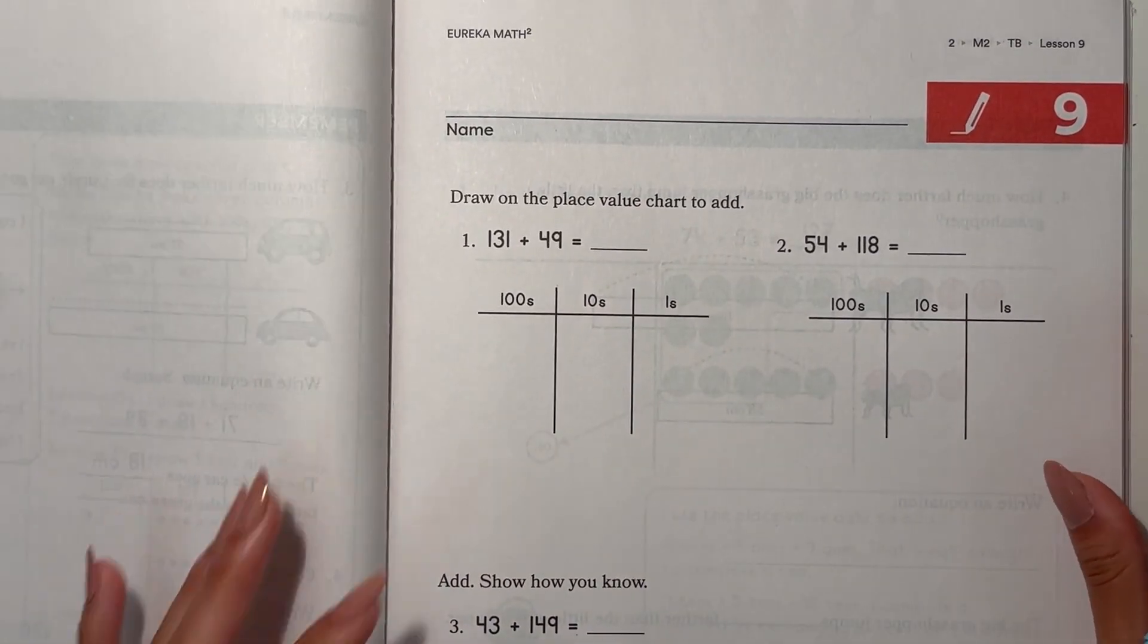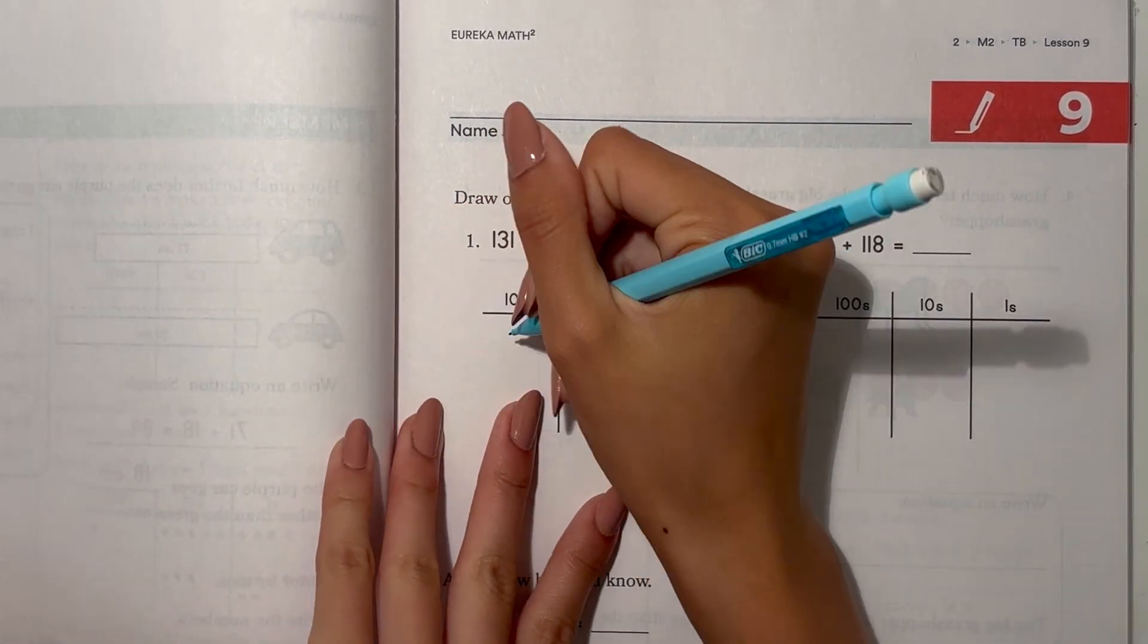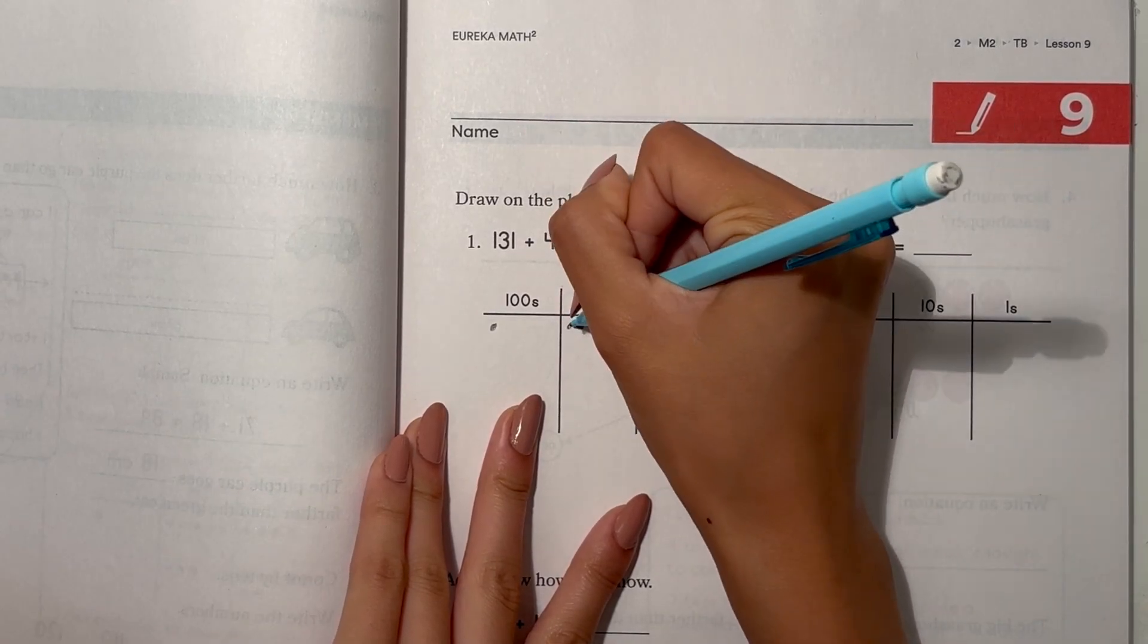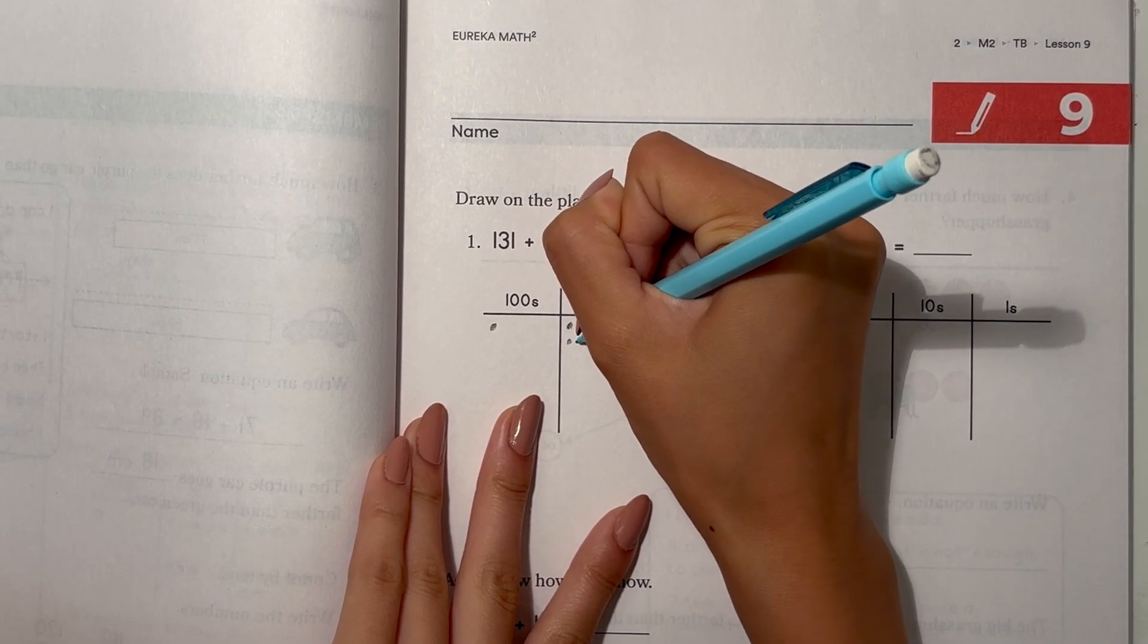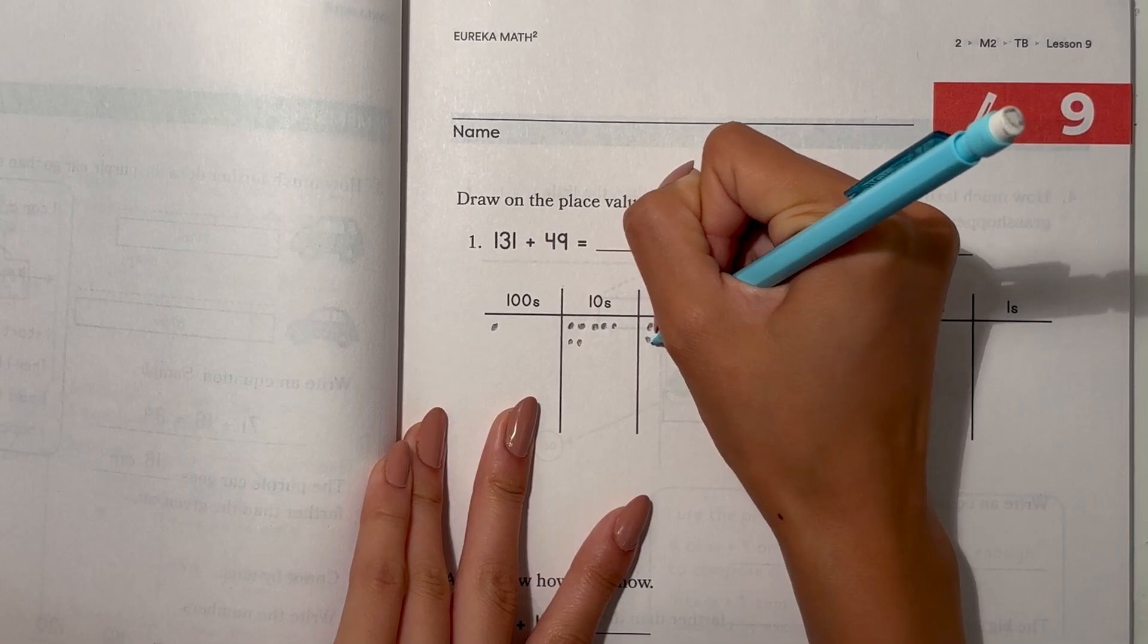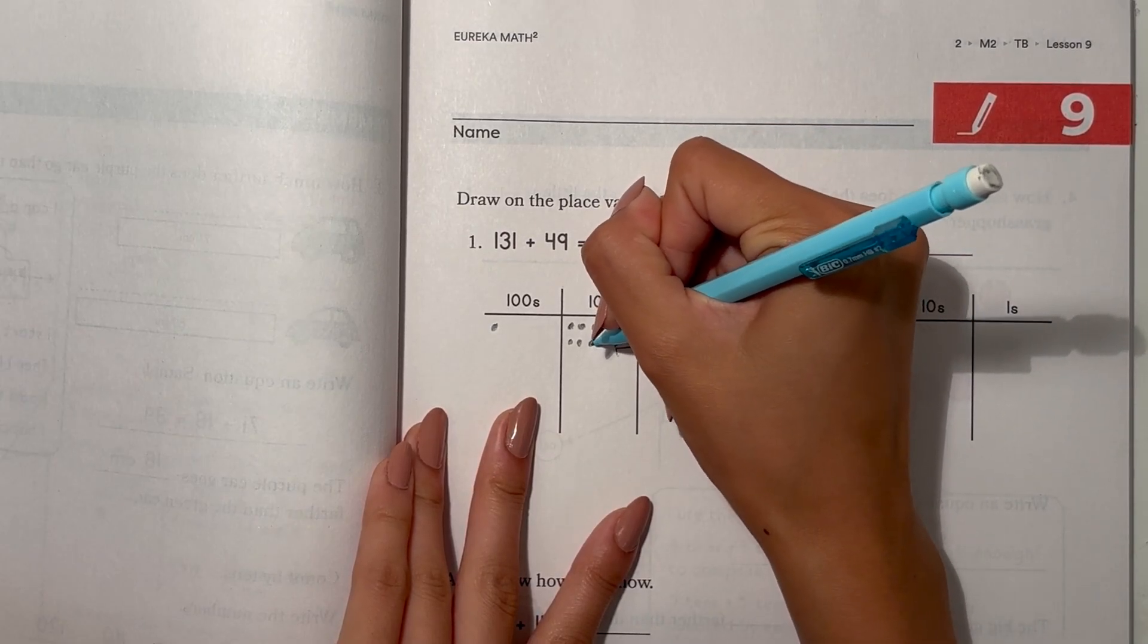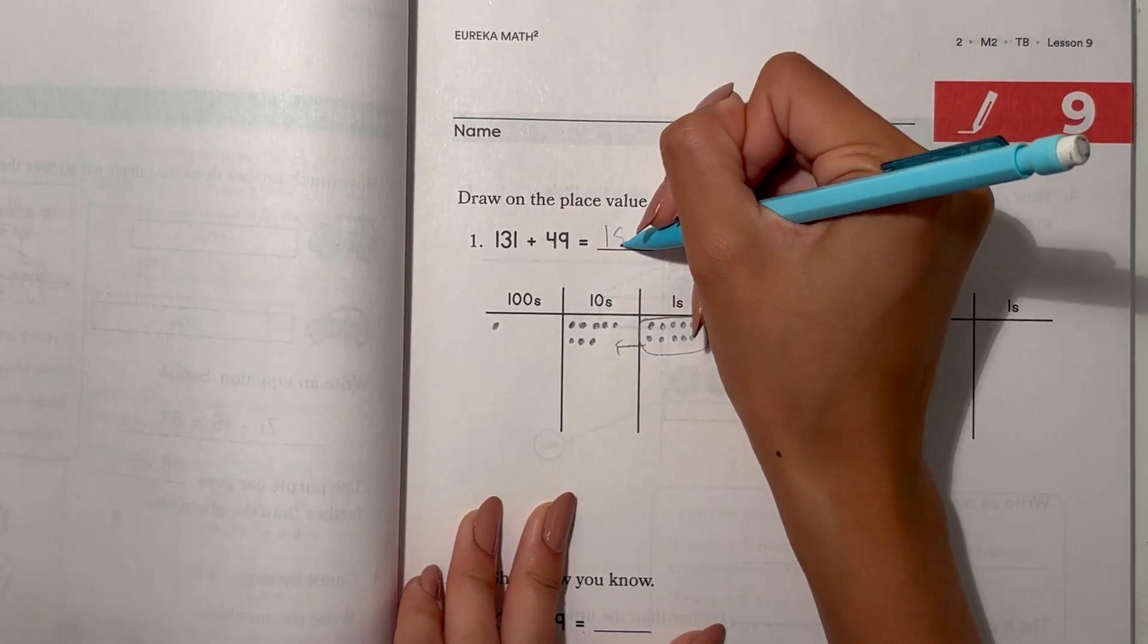Alright, Lesson 9. Draw on the place value chart. So here we have 131 plus 49. And 1, 2, 3, 4, 5, 6, 7, 8, 9. So we have 10 ones now. So this regroups and becomes the 10 in the tens place. And then we have 10, 8 tens. So 180.